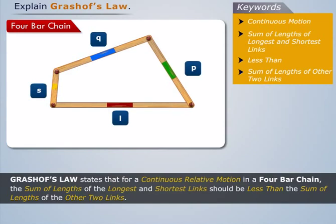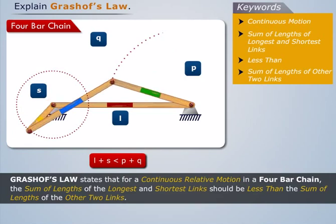Consider a four-bar chain which follows Grashoff's Law. Since the chain follows Grashoff's Law, let us check whether this chain executes any continuous relative motion or not. If we fix link L and impart motion to the mechanism, then link S executes full rotation and link P oscillates.